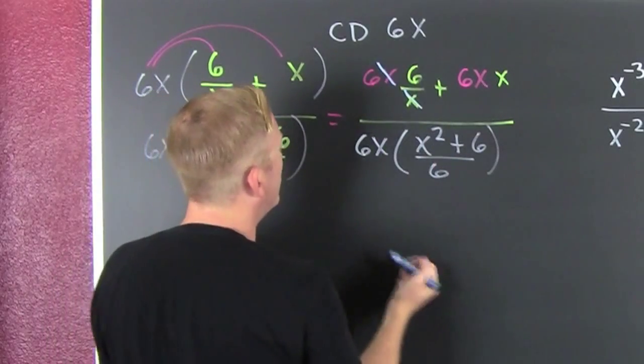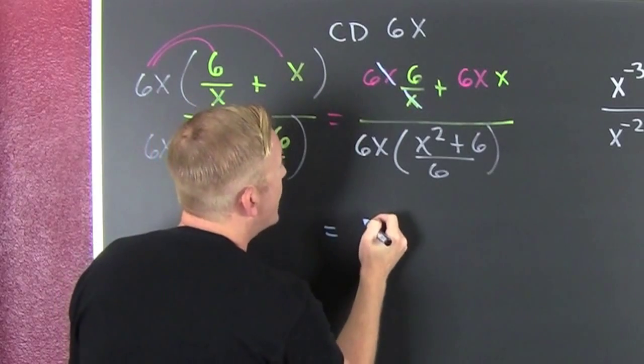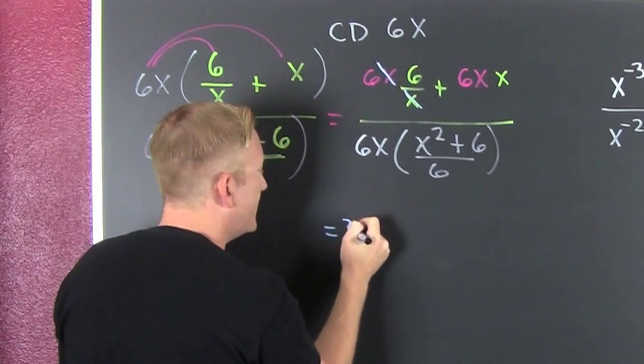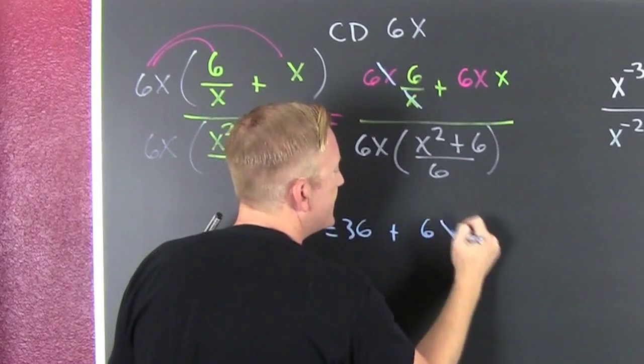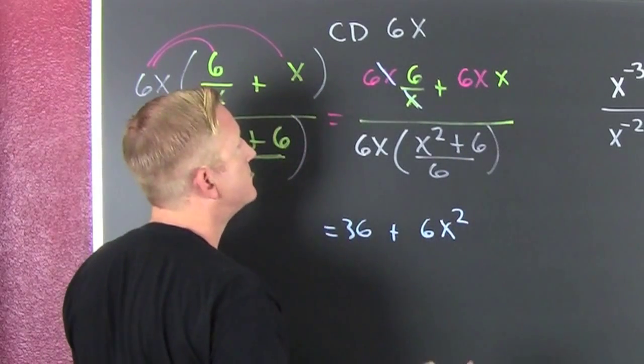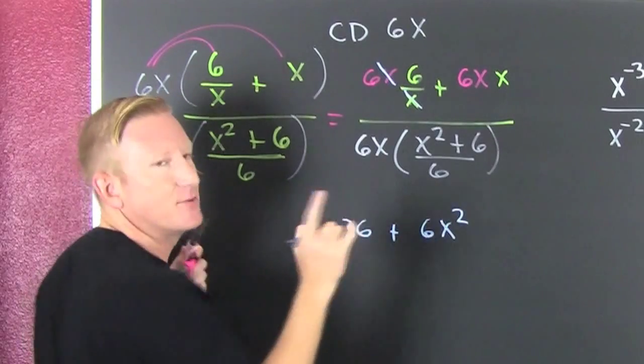Over here with the x's. So then I have a... That's 36. Plus 6x squared. And on the bottom, this is why.